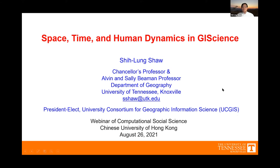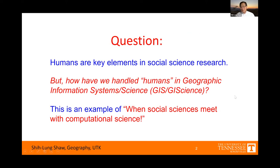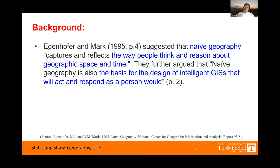To start, I would like to raise this question: we all know that humans are key elements in social science research, but how have we handled humans in geographic information systems and GI science? This is one example of when social sciences meet with computational science. Many of you have been working with GI science for quite a long time, and if we really think about it, how have we handled humans in GIS — probably not very well.